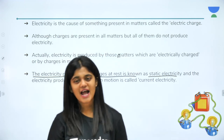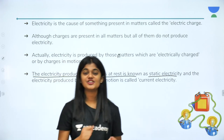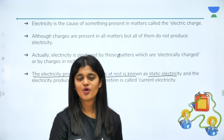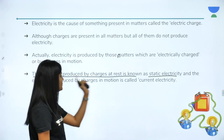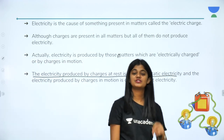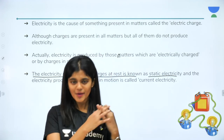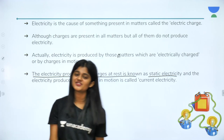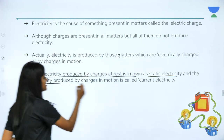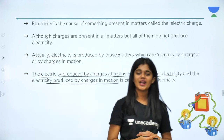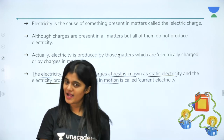Now there are two types you need to know: charges at rest and charges in motion. Both produce electricity. Electricity produced by charges at rest — we call it static electricity. Static means fixed. In this chapter we are going to see static electricity. The electricity produced by charges in motion is called current electricity, which you have already studied.